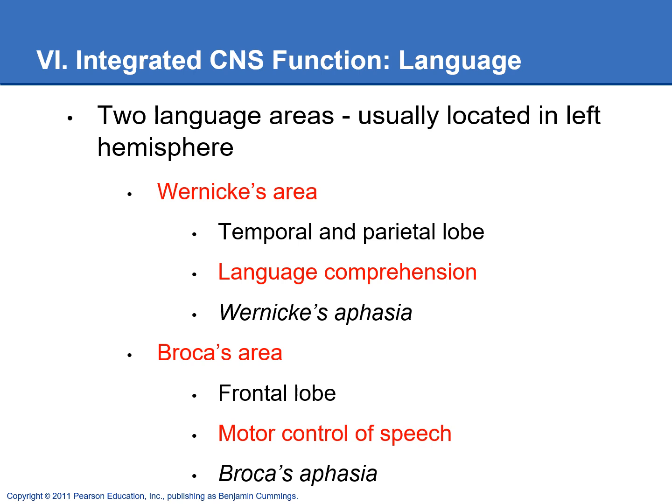If a stroke affects Broca's area, you can end up with Broca's aphasia. Somebody with Broca's aphasia can understand what someone is saying to them and what they're reading, but they just have trouble getting the words out. They are very slow to form words, and have a very halting speech pattern that's not very fluid.